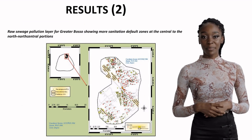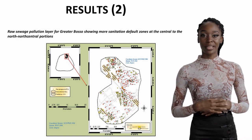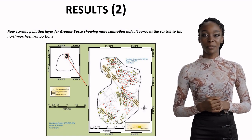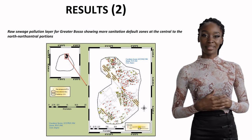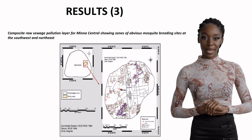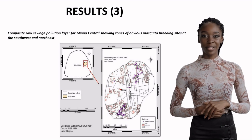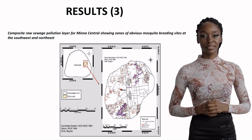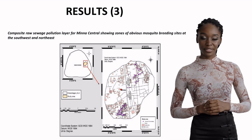Looking at Greater Basso, we see a higher concentration of sanitation defaults in the central to north-central portions, indicating significant urban decay in these areas. Minna Central's map reveals distinct mosquito breeding sites clustered in the southwest and northeast regions, showing a clear pattern of sanitation challenges.